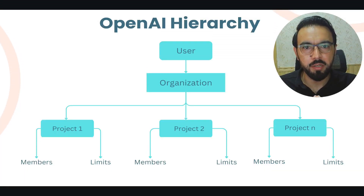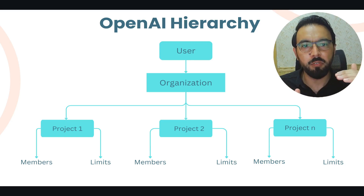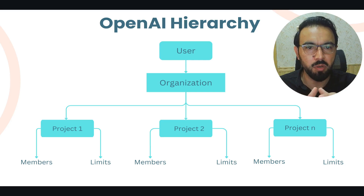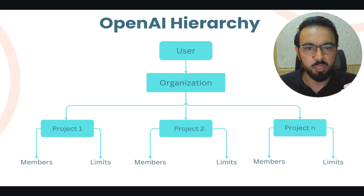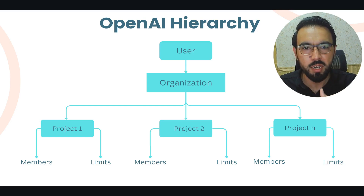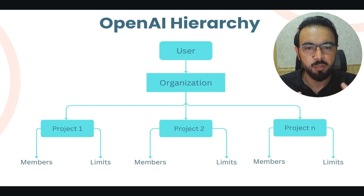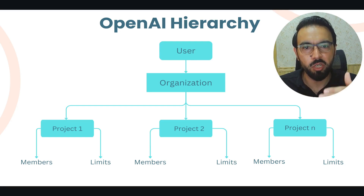To quickly revise: first you have a user when you sign up, and that gives you a default organization. That organization comes with default setup limits called organization limits — a limit of spending, requests per minute, requests per day, tokens per minute, tokens per day — all coming from the OpenAI platform. As your usage increases and you move to the next tier, your organization limits increase accordingly. To set different API limits for different teams, you can create separate projects, add team members, and set monthly budgets and rate limits for each project.